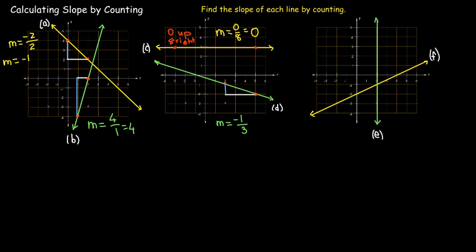All right. In the last grid here, line E is a vertical line, which means that the slope is undefined. Now, I should know that just based on the fact that it's a vertical line. But if I try to calculate it, I pick a couple of points here. And I am going up two and zero to the right and zero to the left, which would mean that the slope would be two over zero, which is indeed an undefined number.